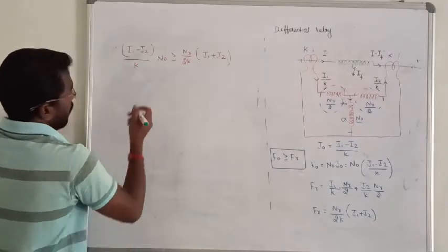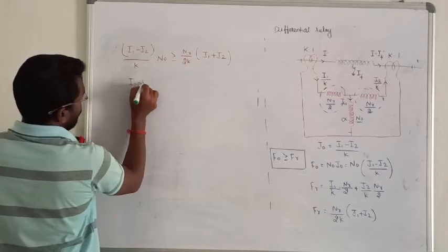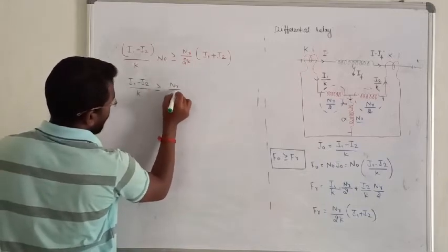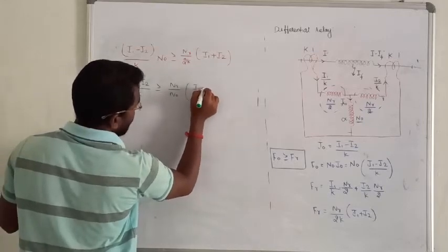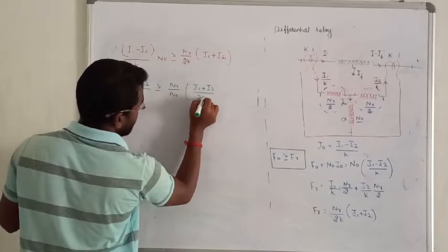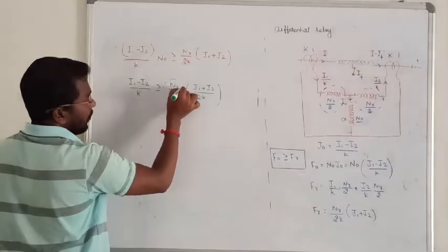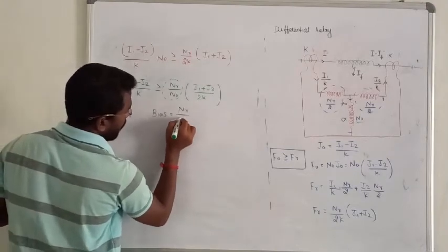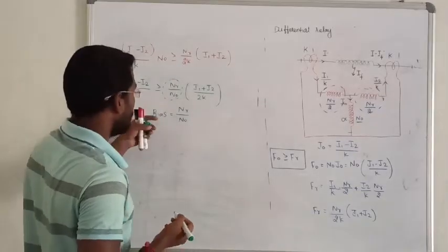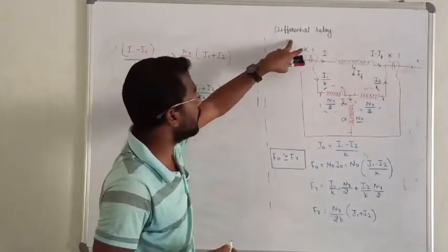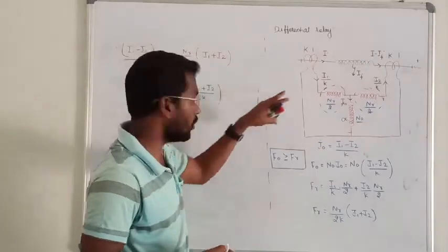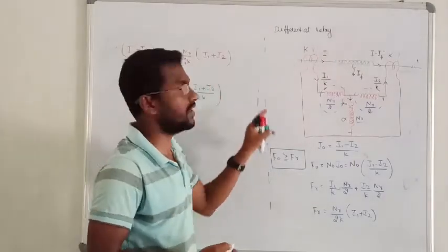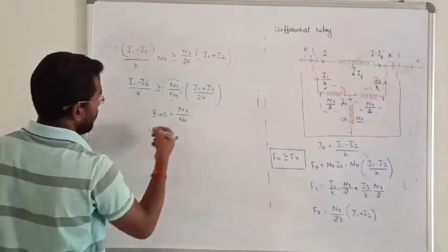I can write: I1 plus I2 divided by twice of K. Here NR by NR is called the bias of the transformer. So that is the relation between NR and NR. This is also called bias differential relay, or percentage differential relay. Just remember.